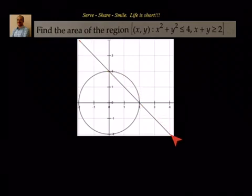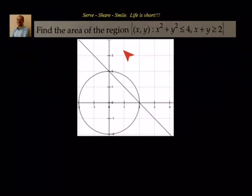We have to find the area of the region which satisfies x² + y² ≤ 4 — that means all the area inside the circle. All those points satisfy x² + y² ≤ 4. Similarly, x + y ≥ 2 is given by all the points which are on the right side of the straight line — any point satisfying x + y ≥ 2 will be either on the line or to the right side, away from the origin.